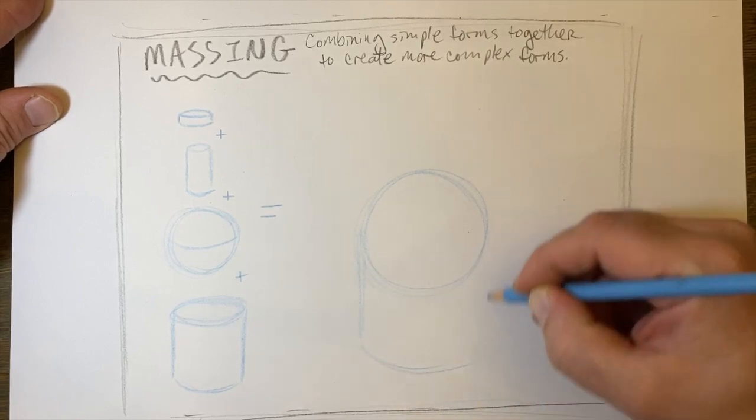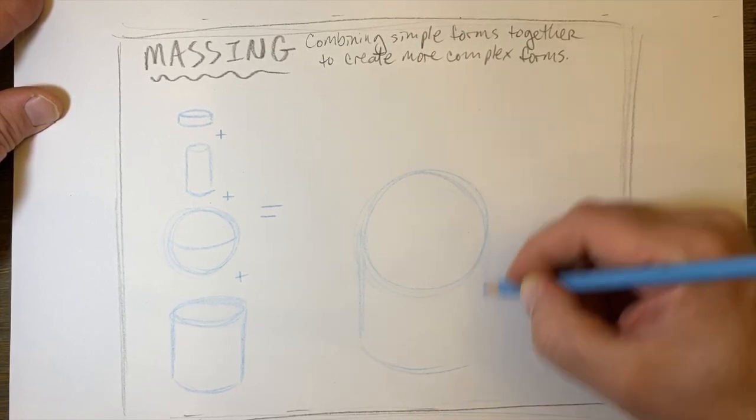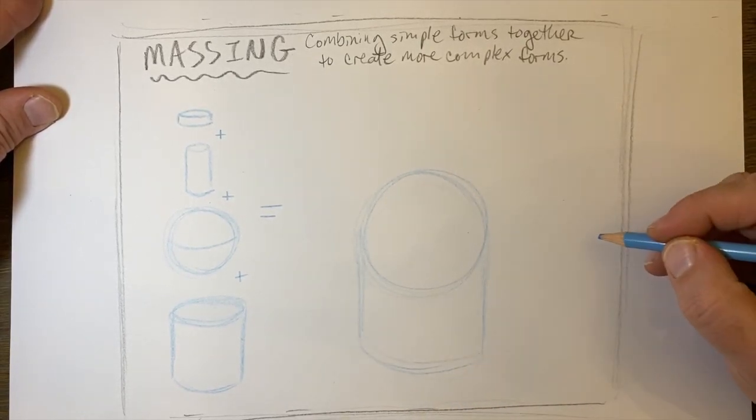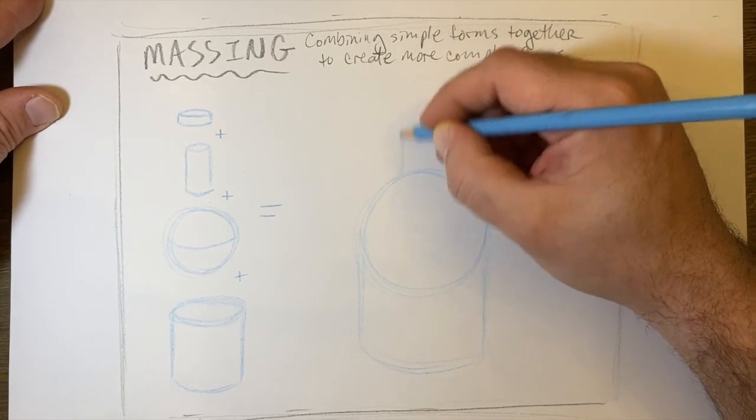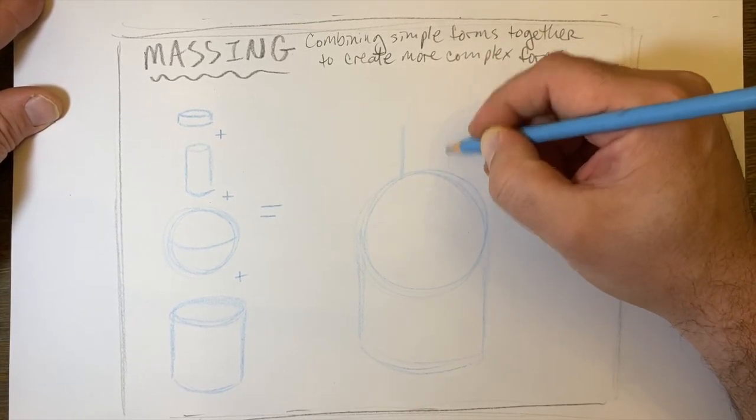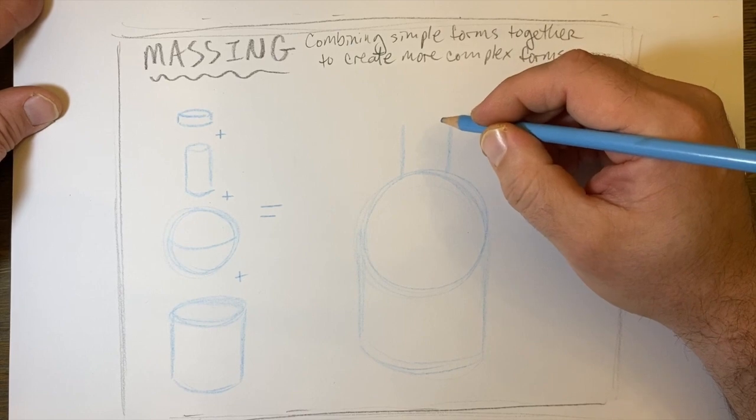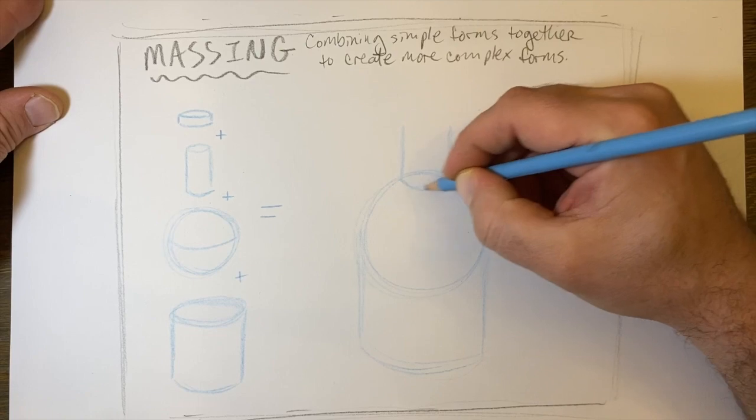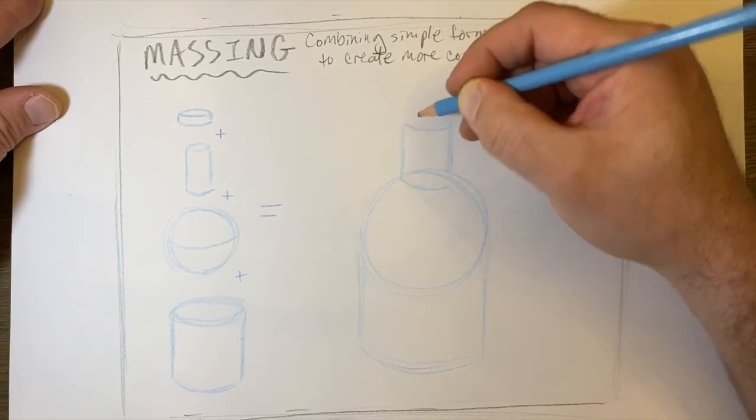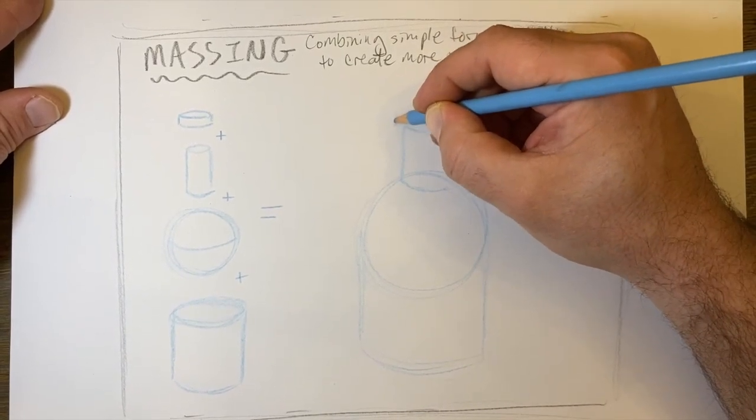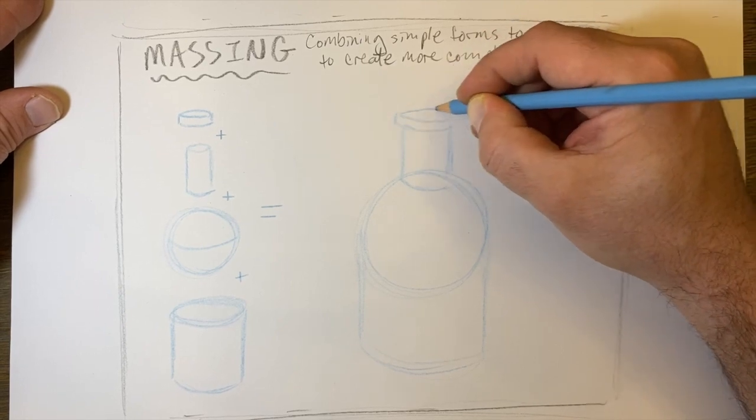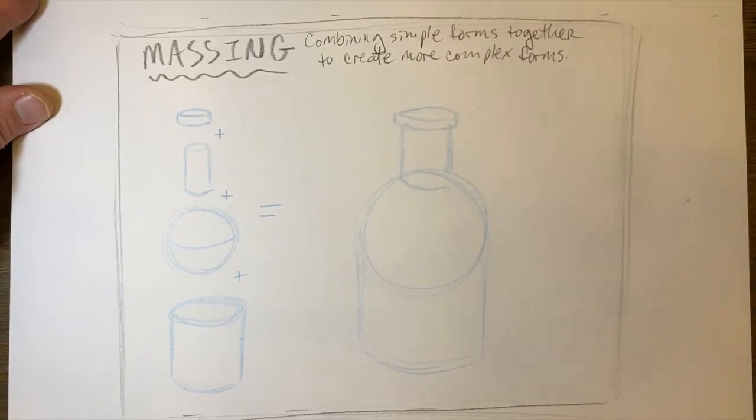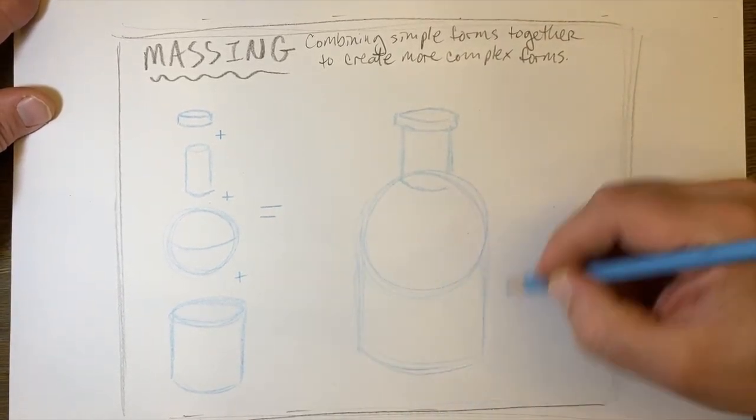So I plot in my sphere and I put my cylinder on top of it. Notice I'm drawing right on top of each form. In fact, I'll even bring the bottom of that top part of the cylinder into the sphere a little bit and I'll add my little hockey puck on top.